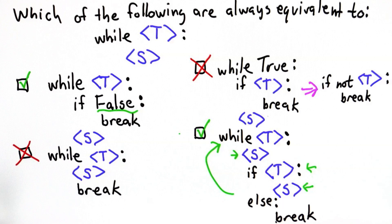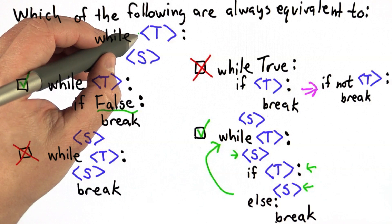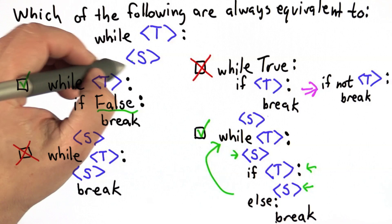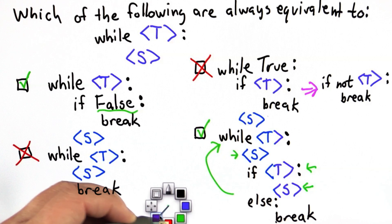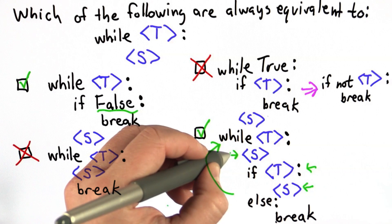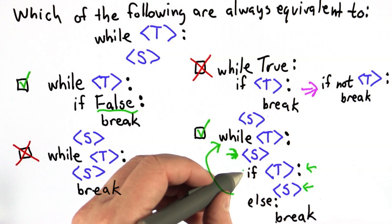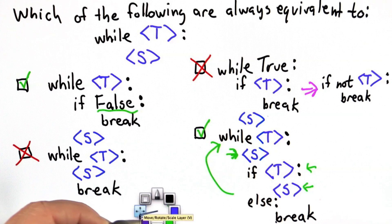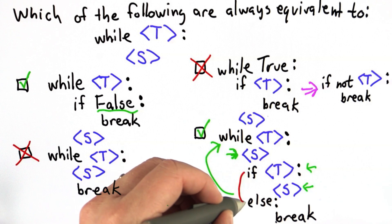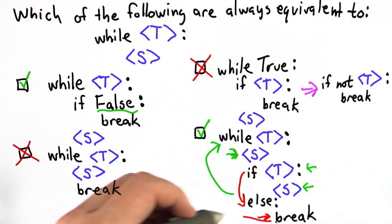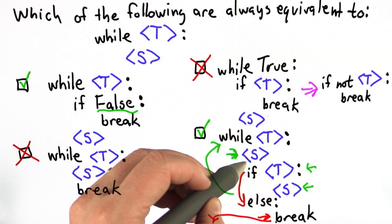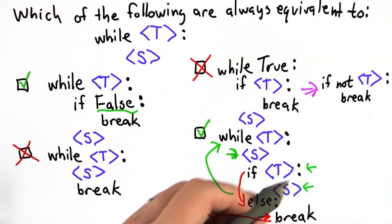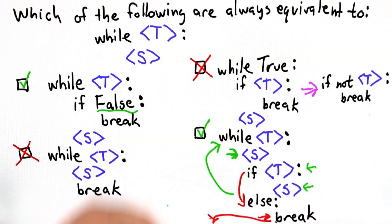We should trace through the case where the test condition is not true. If the test condition was true, we execute s. If it's not true the second time, then we're done with the loop and we continue. In this version, if the test condition is true the first time we execute s. If it's not true the second time, we go to the else, then we go to the break, and the break exits the loop. So we have the same exact behavior: we executed t once, then s, then t again, didn't execute s again, and broke out of the loop to continue. So these two are equivalent; the other two are different.